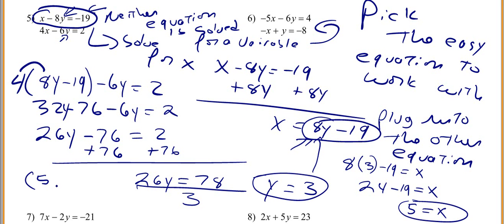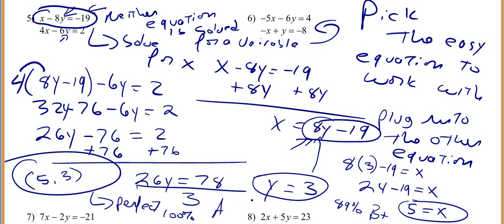To get full credit, you do (5, 3) as an ordered pair. That is perfect. If you are in my class, this will get you 100%, this will get you an 89%. A answer, B plus answer. Good luck.